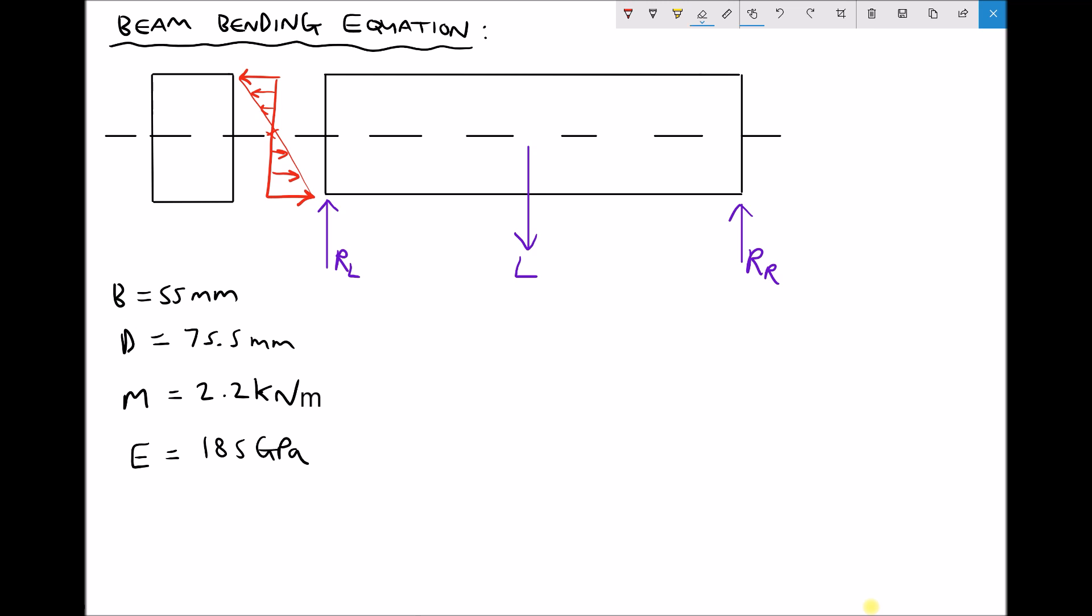So now we can introduce our beam bending equation. Our beam bending equation takes the following form. We have sigma over y equals m over i equals e over r. So when we have these three part equations, we can use any two parts at a time. If, for example, we knew the bending moment m and we were calculating the stress sigma, then we could use the first two terms in the equation. If we knew the stress sigma and we wanted to calculate the radius of curvature r, then we would need to use the first and third term in the formula.